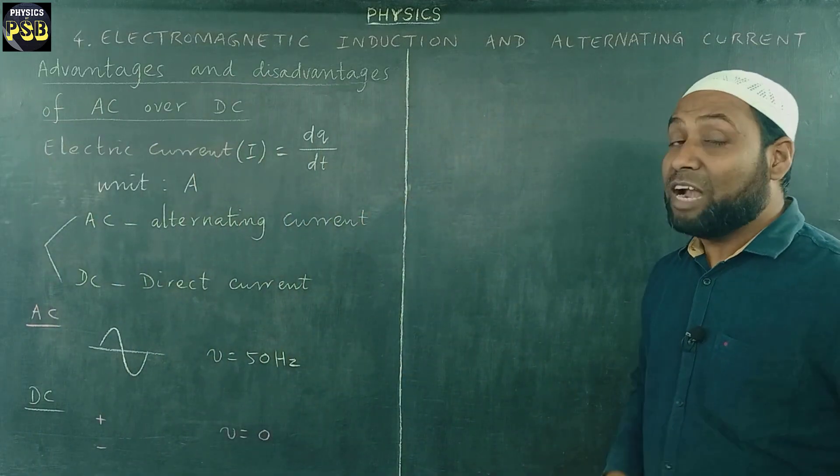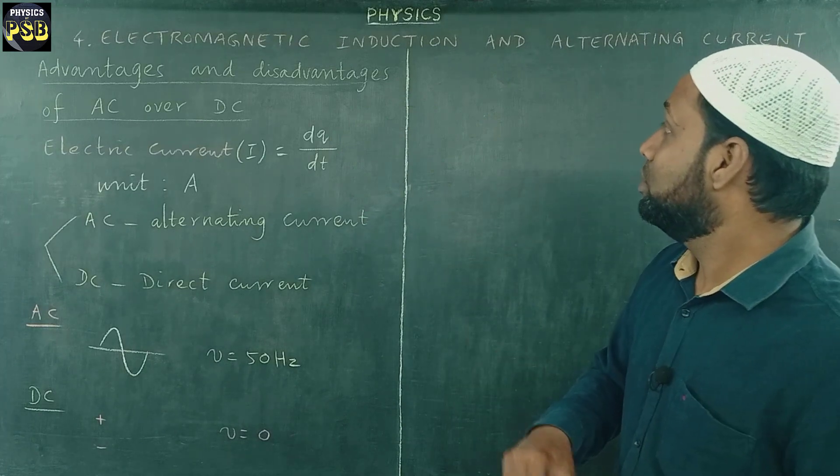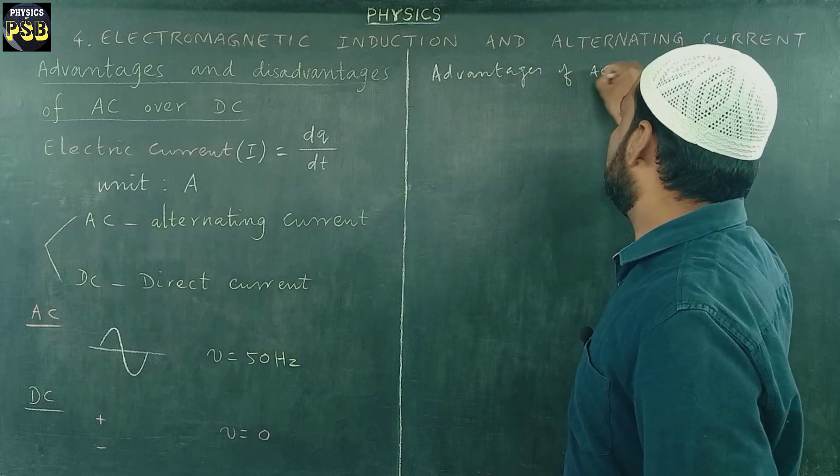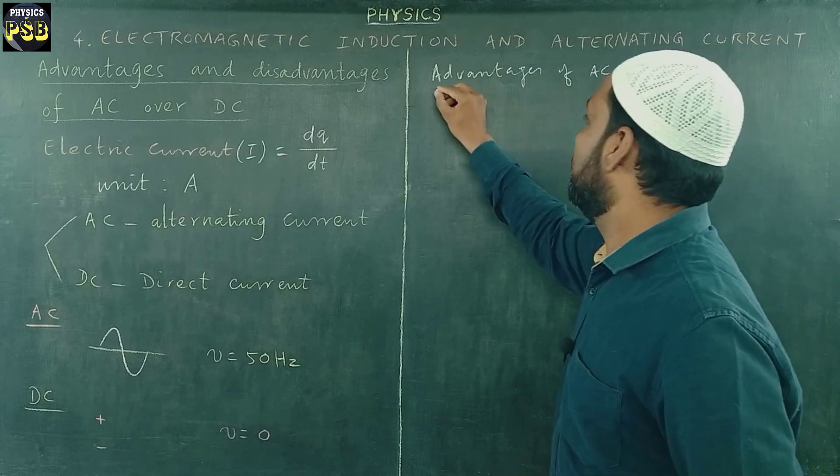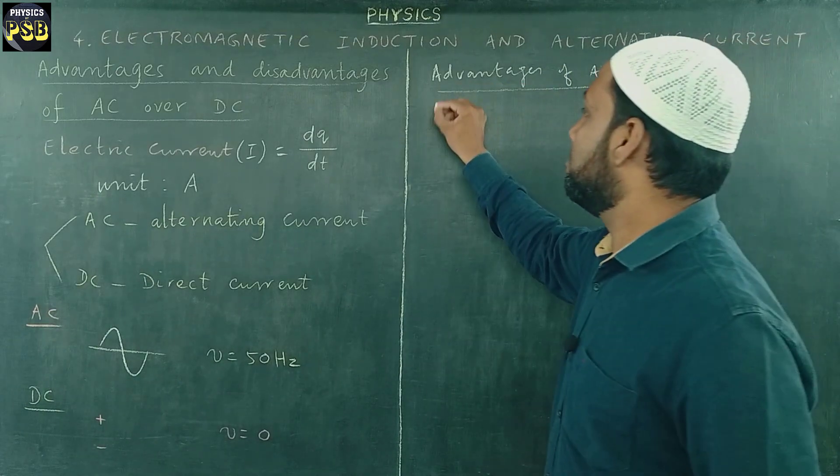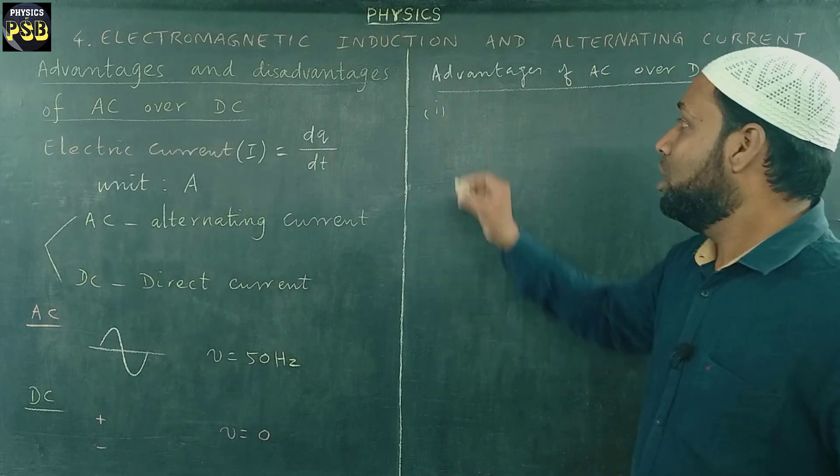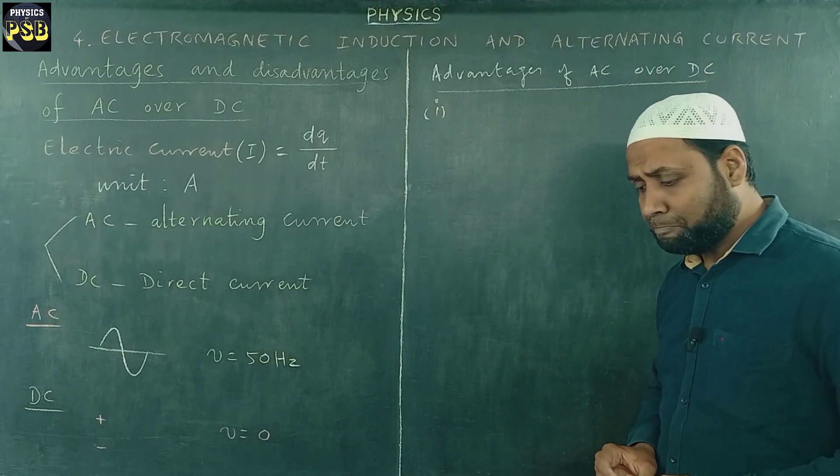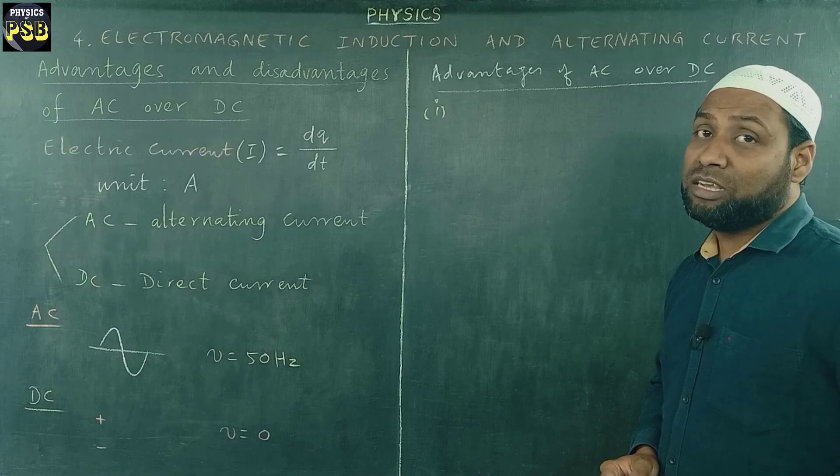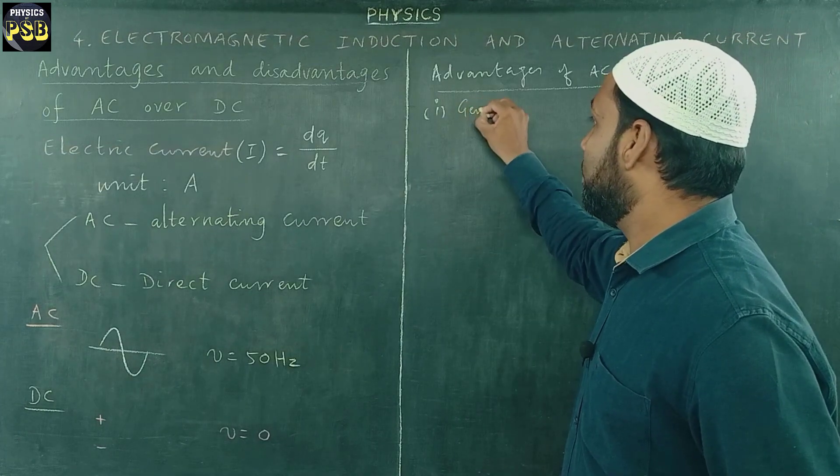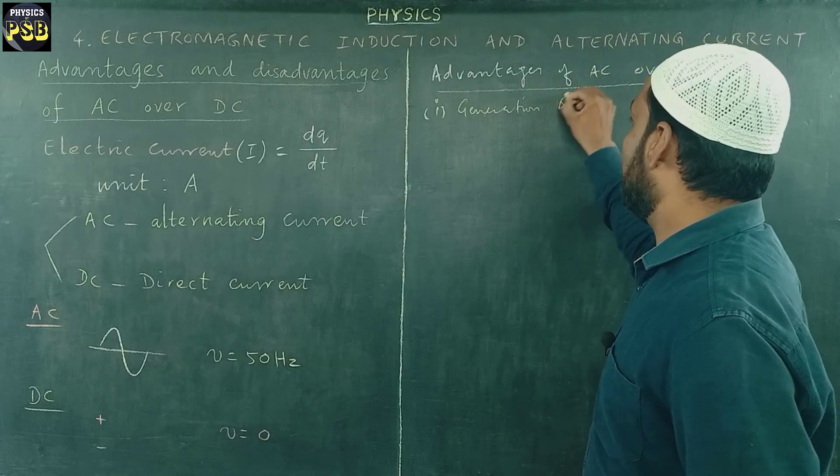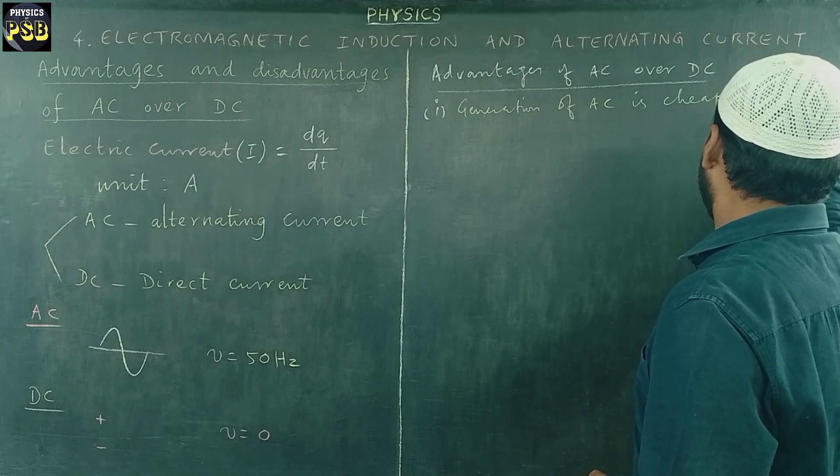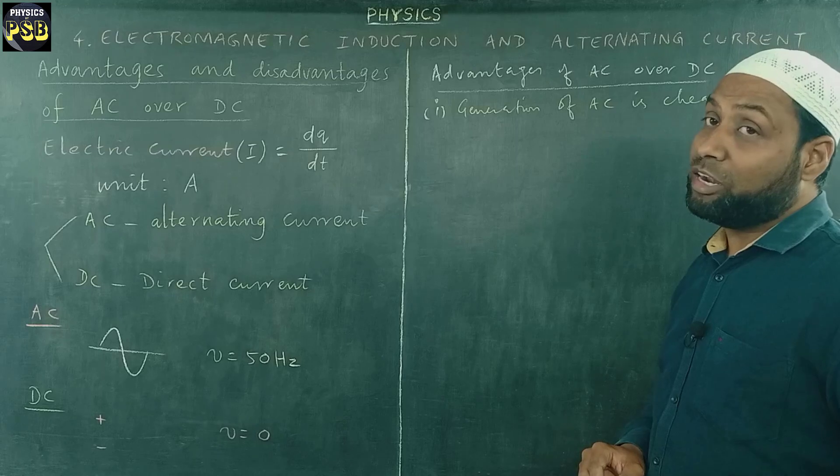Now, what are the advantages of AC over DC? There are a few advantages of AC over DC. Let us see what are they, one by one. First thing, the generation of AC is cheaper than DC. This is the biggest advantage of AC.